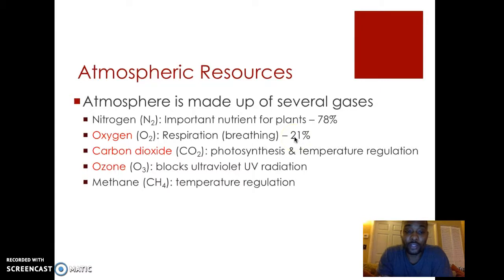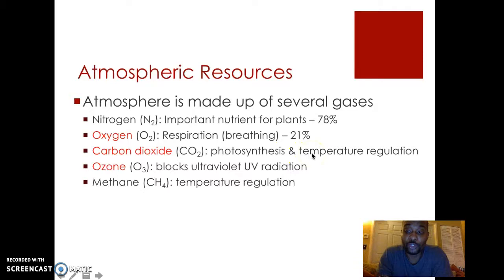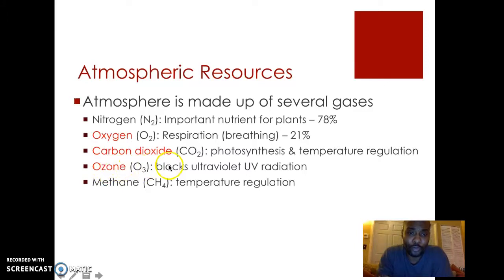About 1% of the atmosphere is made up of all the other gases, such as carbon dioxide or CO2, which is a very important gas needed for photosynthesis. It's also a greenhouse gas that regulates the temperature of the Earth. A lot of activities are increasing the amount of CO2 in the atmosphere, causing climate change and global warming. There's also ozone or O3, which blocks UV radiation from the sun, and methane, another greenhouse gas that helps keep the planet warm.